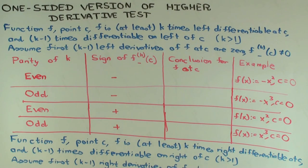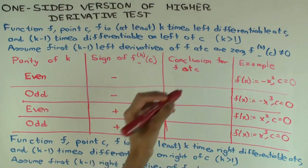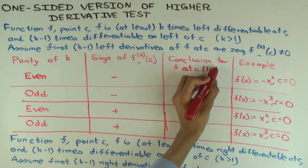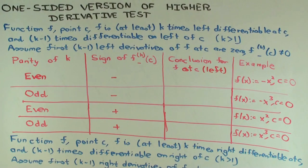So now we can use information about whether k is even or odd, and whether the kth left derivative is negative or positive, to draw conclusions about whether you have a strict local max or min from the left. Let's do that.